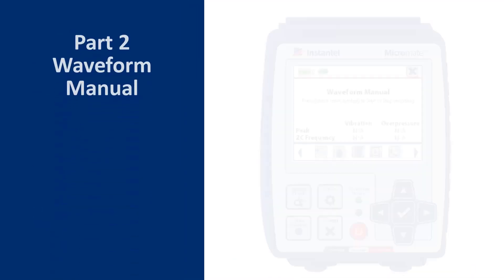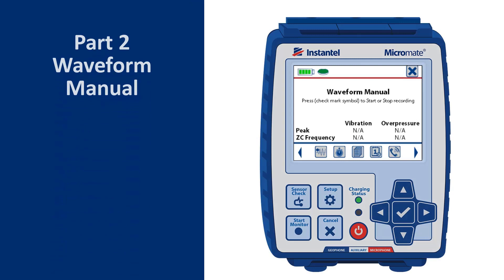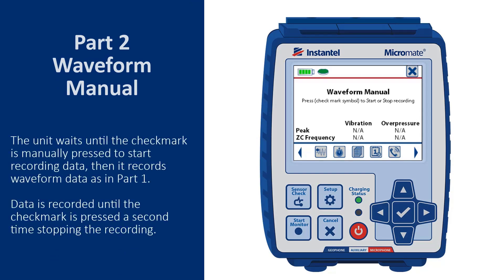The second record mode is Waveform Manual. This manual mode is convenient when automatic triggering is not practical, or to record the background vibration and overpressure levels for an extended time period in the vicinity of a site.